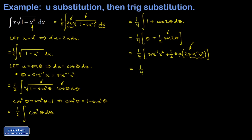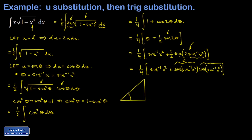The factor of two cancels the one-half out front, which is nice. I end up with sine of the angle whose sine is x-squared — that's just x-squared since sine and arcsine undo each other — times cosine of the angle whose sine is x-squared. That cosine requires us to draw a triangle. The angle whose sine is x-squared has opposite side x-squared and hypotenuse 1. Using the Pythagorean theorem: the missing side squared plus x-squared squared (which is x to the fourth) equals one-squared.